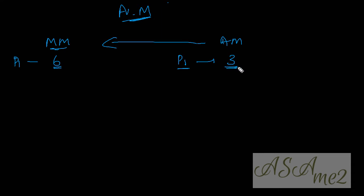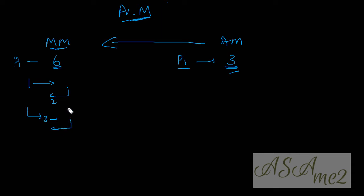Aggressive mode does it a little quicker, in three packets. In main mode, the phase one parameters are exchanged in parts. In the first packet we send the phase one policies. In the second packet, the responder selects and sends back the selected policy. In the third packet we send the key exchange payload and nonce. In the fourth packet, the responder sends key exchange payload and nonce, and NAT-D is also done in the third and fourth packets.